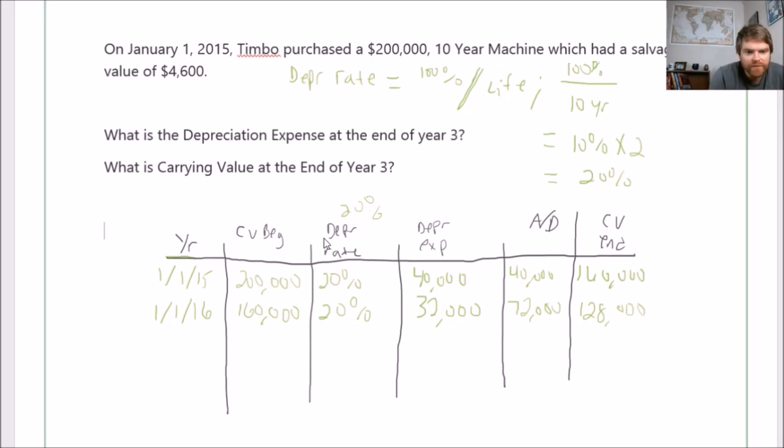Notice carrying value is going to keep dropping, right? Because the more you use the machine, the less it's worth, essentially. But another thing about double declining is that you depreciate the machine more in earlier years, and as time goes on it depreciates less. Take a look: first year was $40,000, second year is $32,000, so it's going to keep going down. They call it double declining because it's called accelerated depreciation. You depreciate it more in the earlier years. Very important point. Let's try 2017.